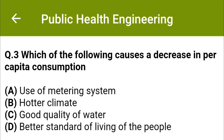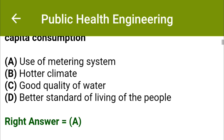Which of the following causes a decrease in per capita consumption? Option A: use of metering system, option B: hotter climate, option C: good quality of water, option D: better standard of living of people. The correct answer is option A: use of metering system.